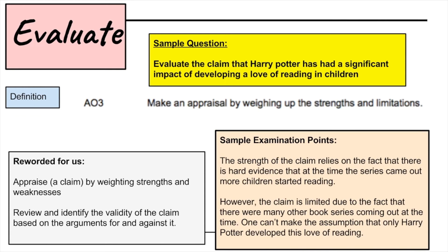Evaluate is AO3 and we see it quite a bit. The IB definition is to make an appraisal by weighing up the strengths and limitations of an argument. Reworded: appraise a claim by weighing the strengths and weaknesses, and review the validity of a claim based on arguments for and against it. A sample question: evaluate the claim that Harry Potter has had a significant impact on developing a love of reading in children. Sample evaluation points: the strength of the claim relies on hard evidence that at the time the series came out, more children started reading. However, the claim is limited because there were many book series coming out at the time — one can't assume only Harry Potter developed the love of reading. Using words like however or on balance really help when you do an evaluation.